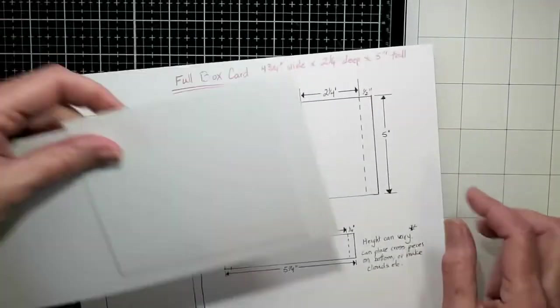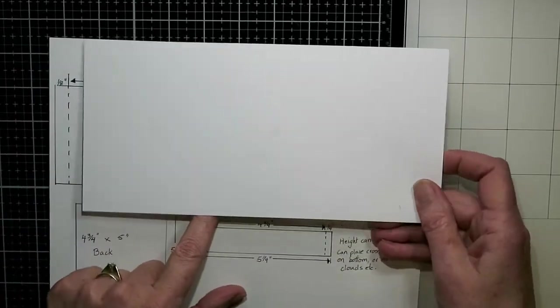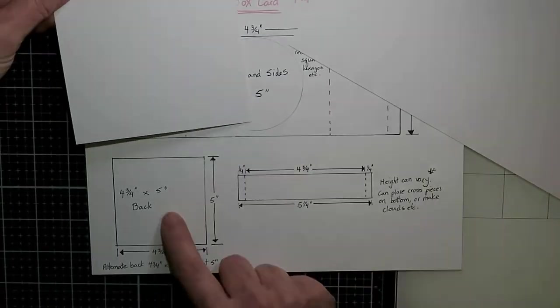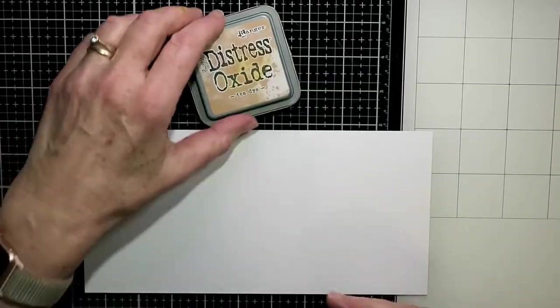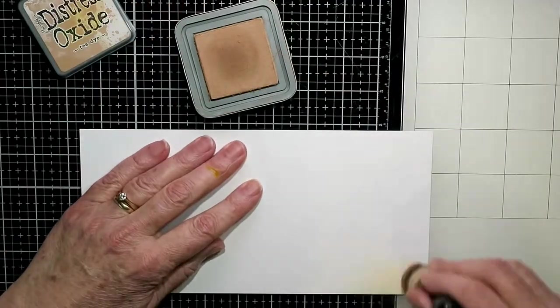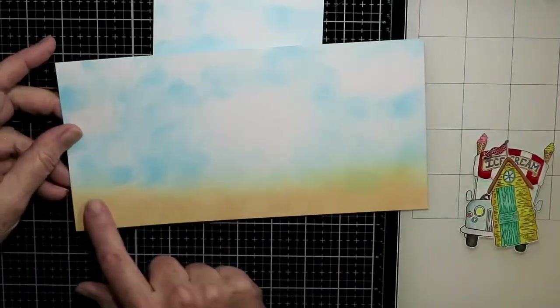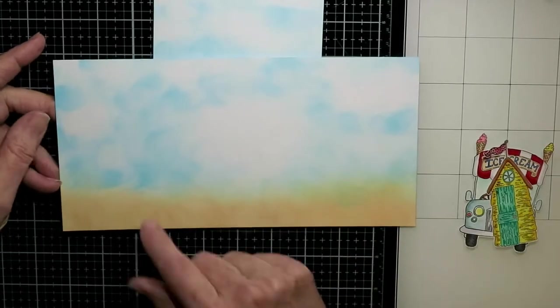I am going to make that first card I just showed you. So I've cut the front, it's ten and a quarter inches wide by five inches tall, and that is the back piece that's four and three quarters by five inches. And before I do anything else, I'm going to do some ink blending, pretty messy ink blending, but it kind of doesn't matter in the end.